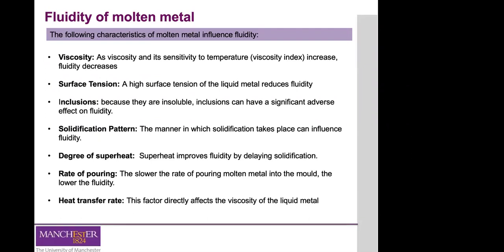The slower the rate at which you pour the material into the casting system and into the mould, the lower will be your fluidity, mainly because of the higher rates of cooling. If you pour the material slowly, you allow more time for the material to exchange heat with the surrounding environment, and therefore decrease the ability of the material to flow. The heat transfer rate behaves in a similar way to the rates of pouring.